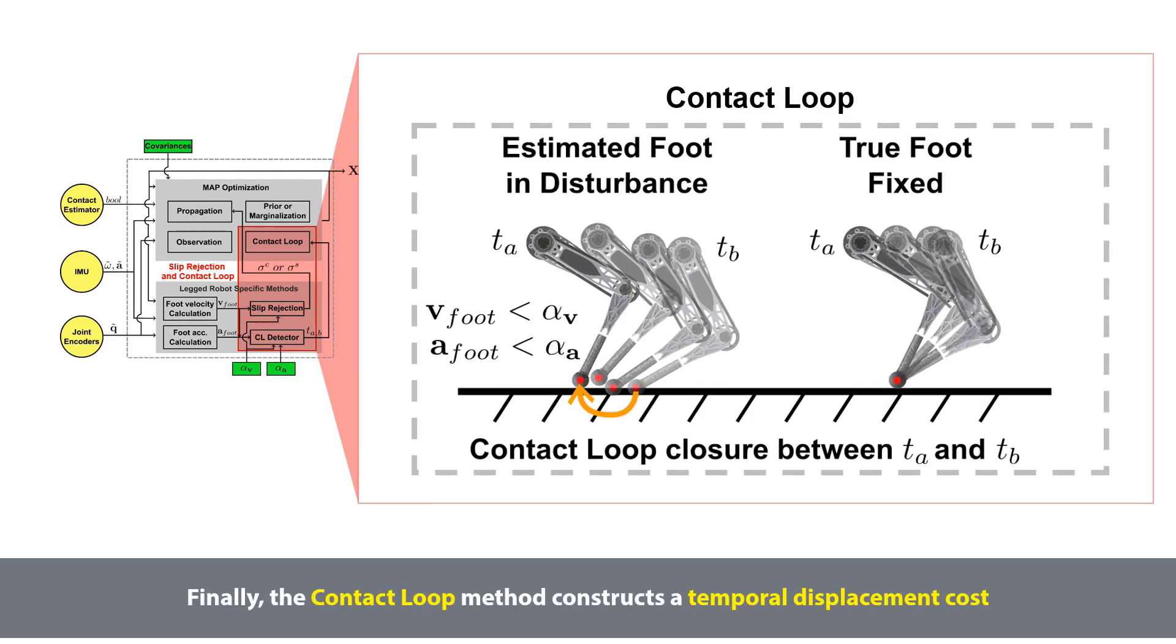Finally, the contact loop method constructs a temporal displacement cost, when the calculated foot velocity and acceleration are lower than the threshold alpha v and alpha a. Note that the contact loop method does not apply to filter algorithms that marginalize the recent states.